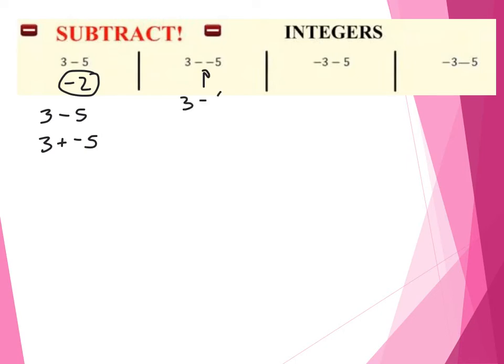Next one, I have 3 minus negative 5. We see this double sign here. Now what happens when we subtract a negative? This always reminds me of English class — 'I don't not have anything' kind of means you have something, or 'I ain't not going to do it' — that's a double negative. What happens to a double negative? Double negative turns positive. So 3 minus negative 5 turns into 3 plus 5, which gives you 8. When you subtract a negative from it, it turns right into an addition problem.